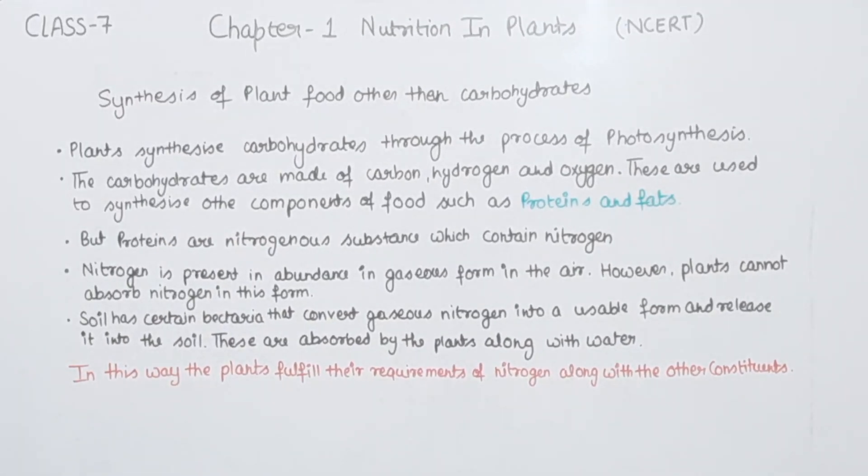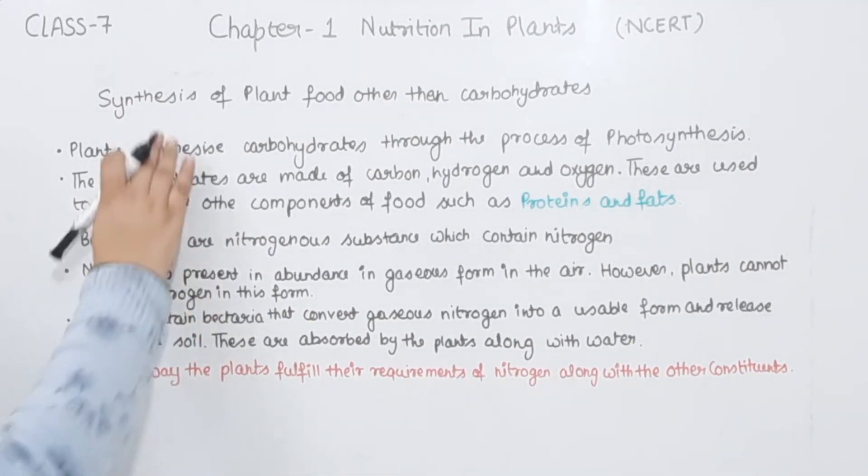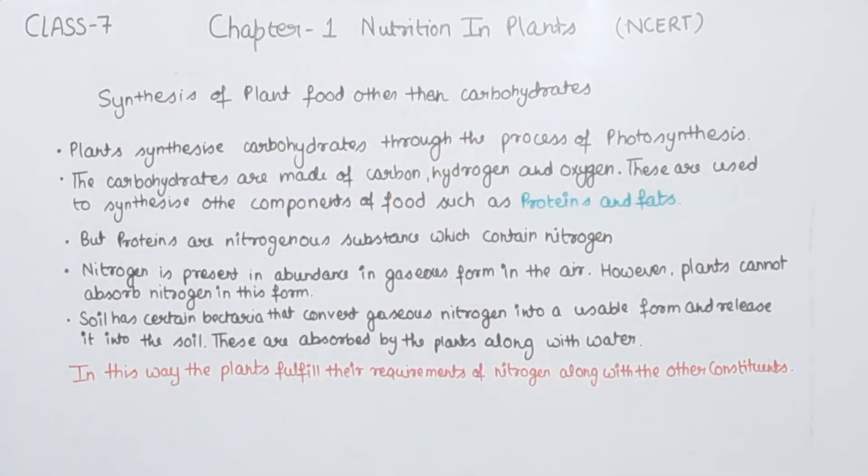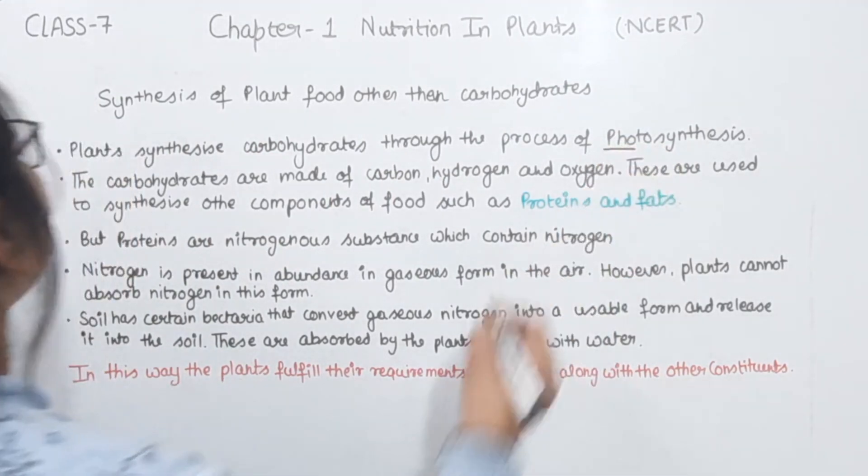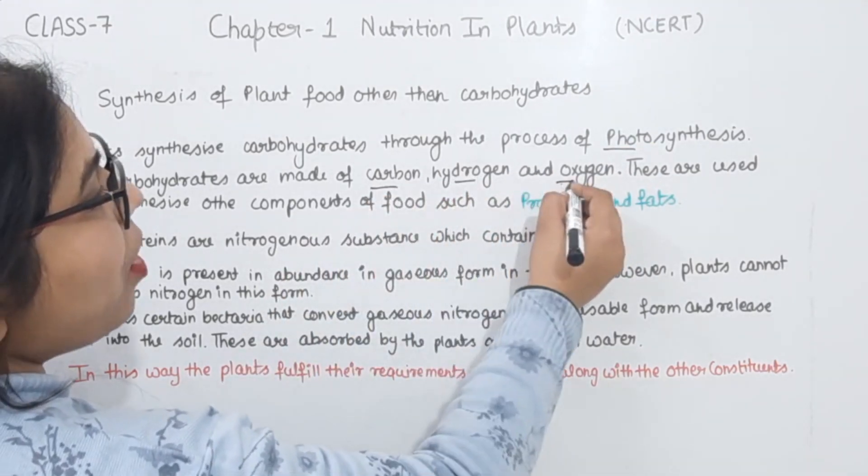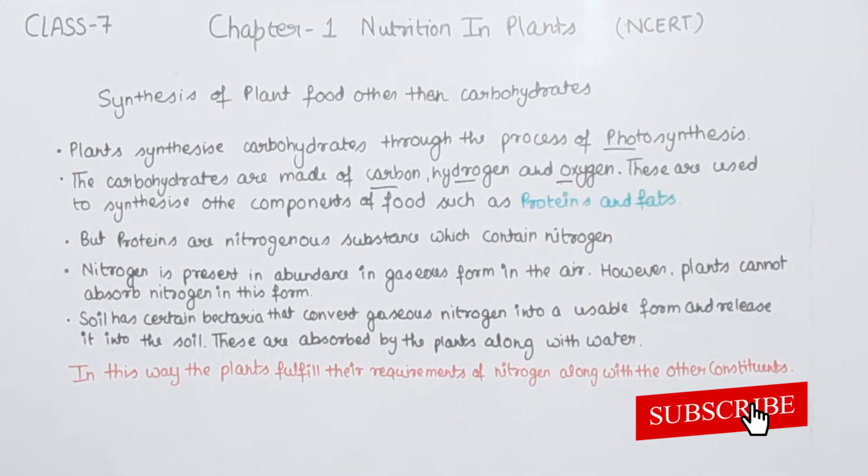So comes to the next topic: the synthesis of plant food other than carbohydrates. Now plants synthesize carbohydrates through the process of photosynthesis, and the carbohydrates are made of carbon, hydrogen, and oxygen. These are used to